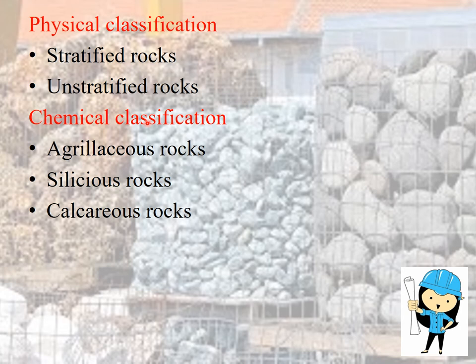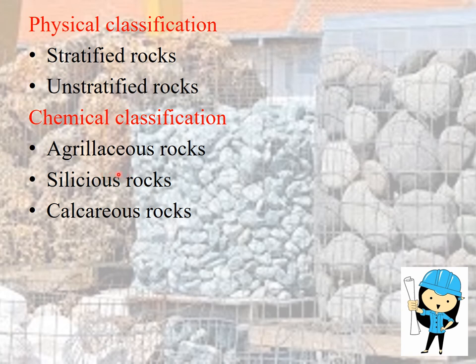Based on chemical classification, there are three types of rocks. First, argillaceous rocks — where the principal constituent is clay. Second, siliceous rocks — where the principal constituent is sand. Third, calcareous rocks — where the principal constituent is limestone. Examples: slate and laterite are argillaceous; quartzite and granite are siliceous; limestone and marble are calcareous rocks.